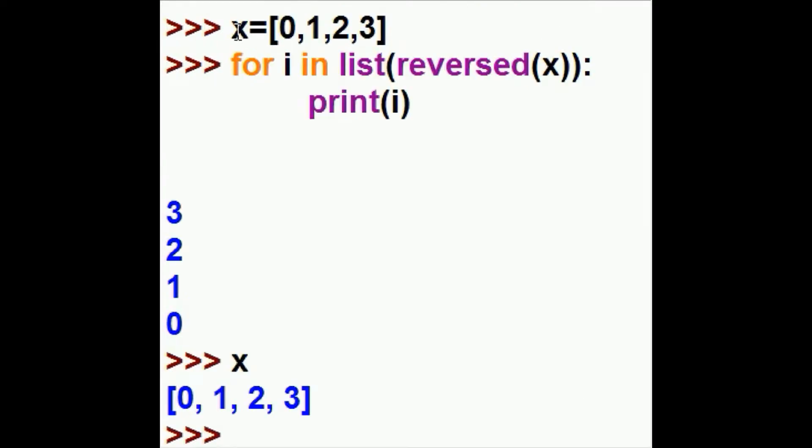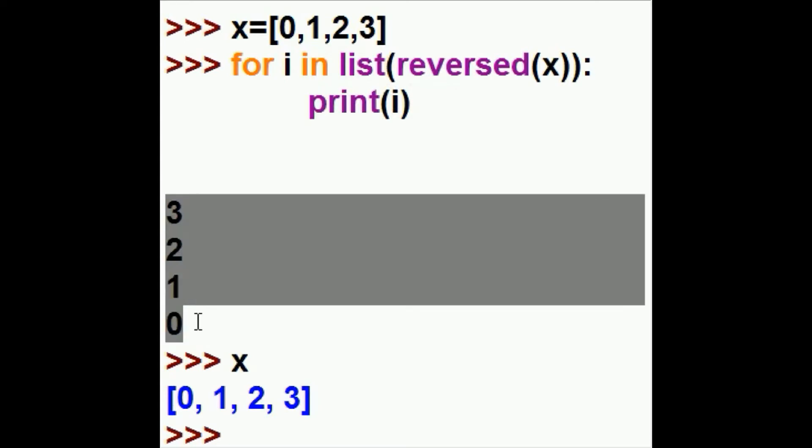You could even take that one step further. Here I key in X equals 0, 1, 2, 3 in square brackets. Now it's a list. Now for i in, make a list out of the reversed of X, and then iterate through this, and then print i. And you'll get 3, 2, 1, and 0.